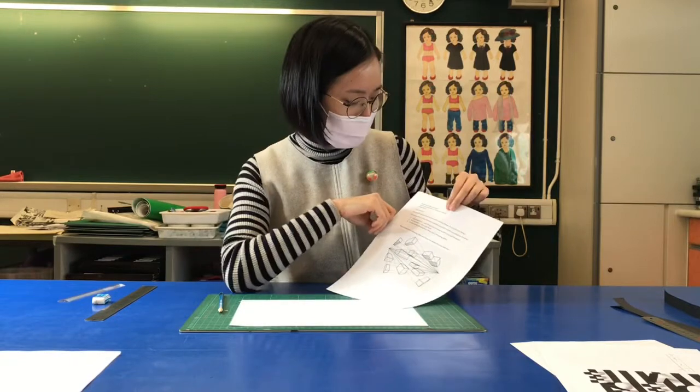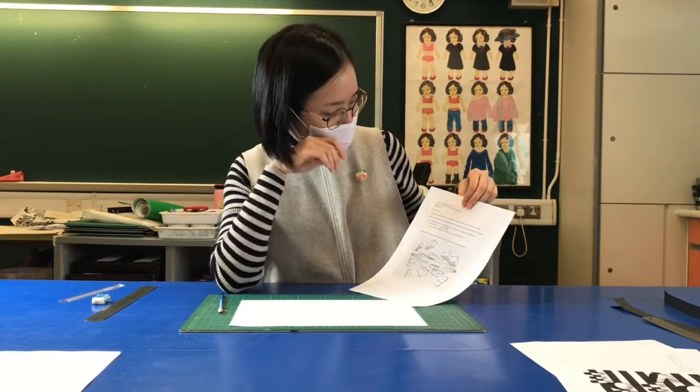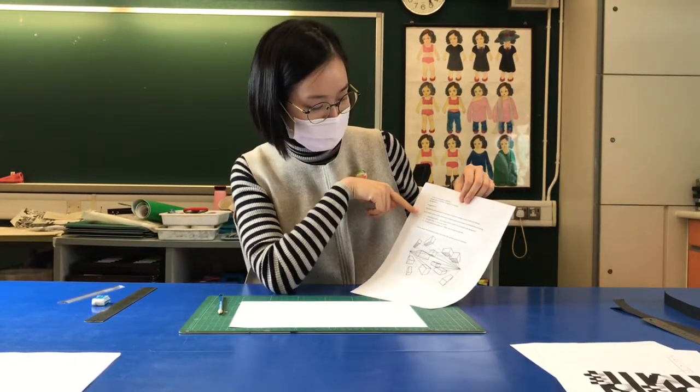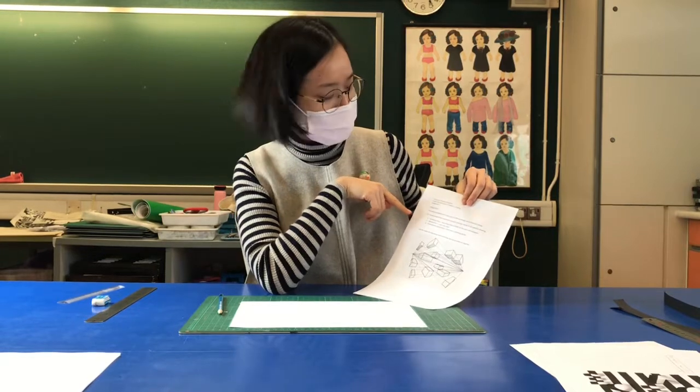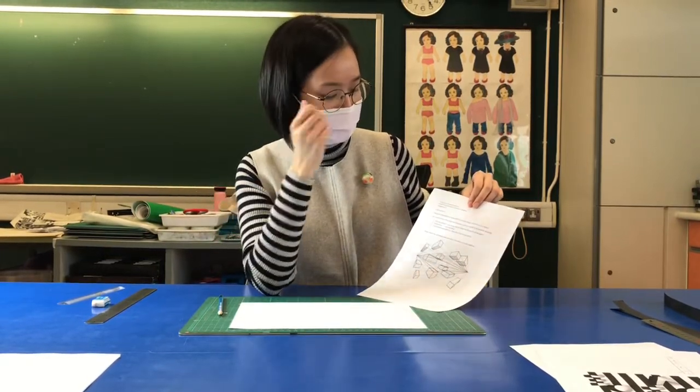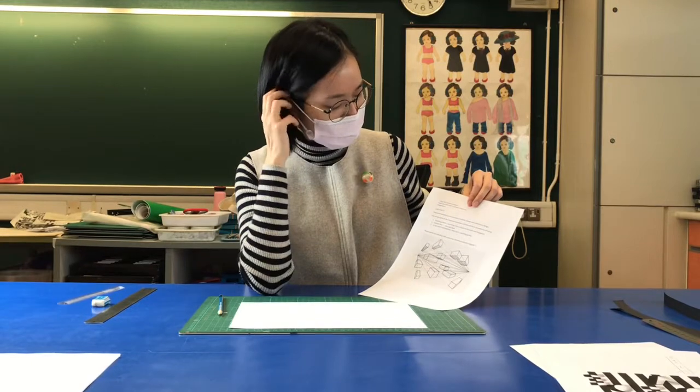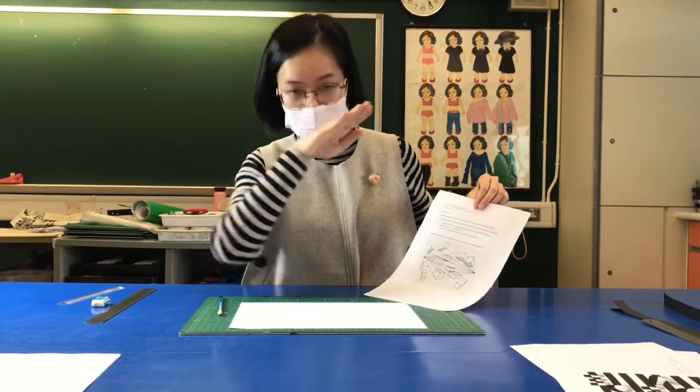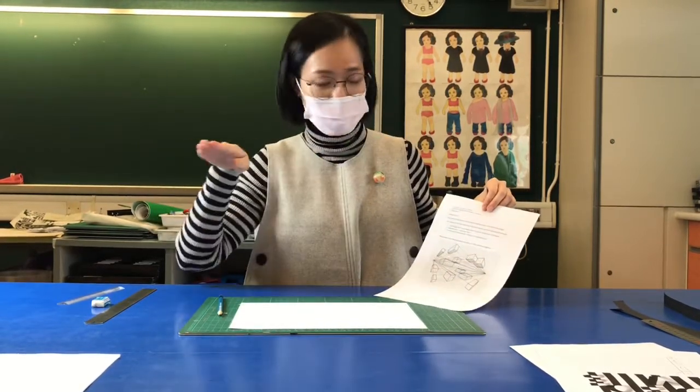So on your worksheets, your assignment, you have to recap some of the main points in perspective drawing, like the vanishing point VP, what we call in short term. And we have horizon line, which is the eye level of a person.